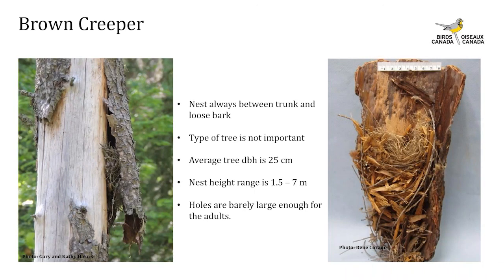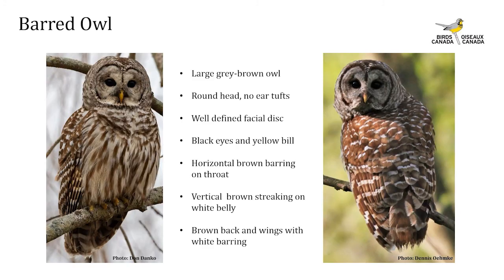Brown creeper nests are always built between the trunk and a loose piece of bark. An adult will move in and out of an area multiple times before choosing a suitable nest site. The type of tree is not very important — they'll nest in both deciduous and coniferous trees as long as loose bark is present. Their average nest tree diameter is around 25 cm DBH, nest height ranges from 1.5 to 7 meters, and the cavity opening is usually just barely wide enough for the adults to fit through.